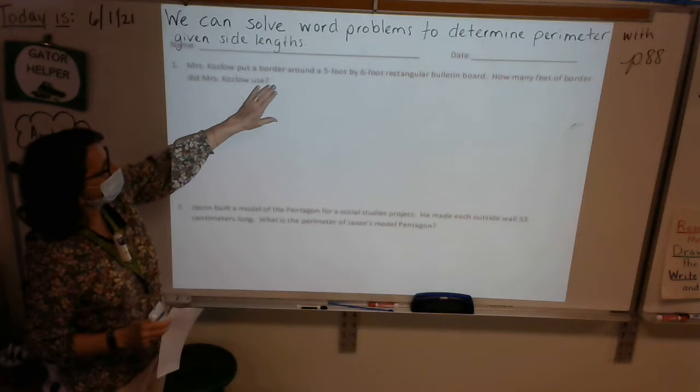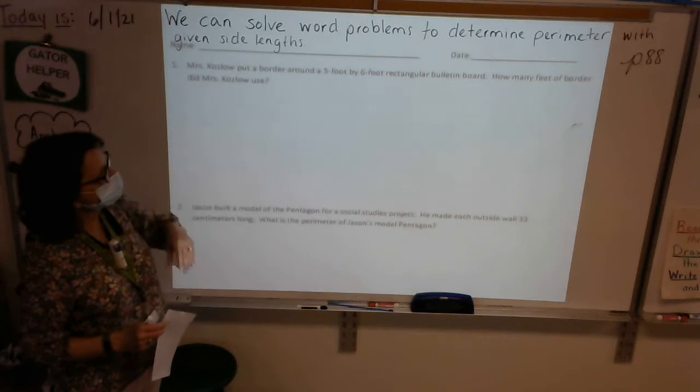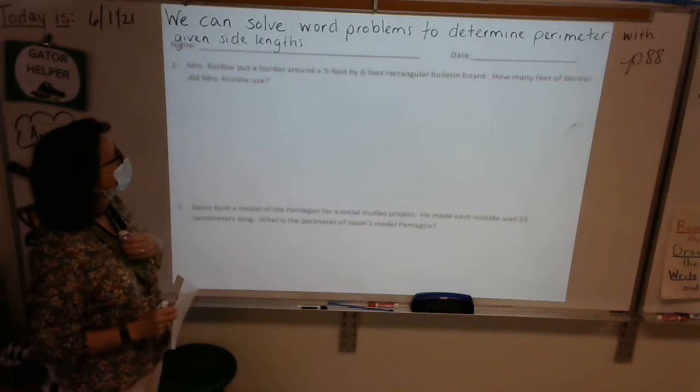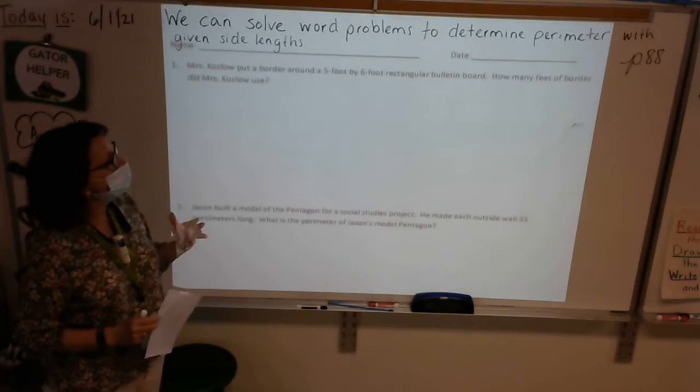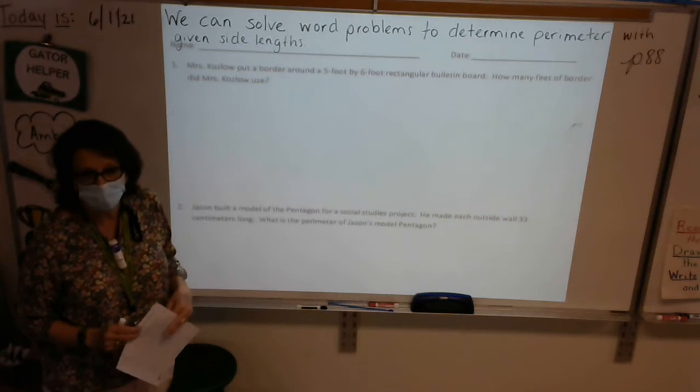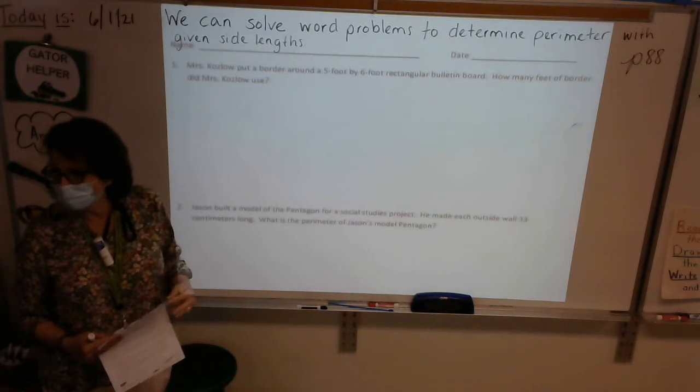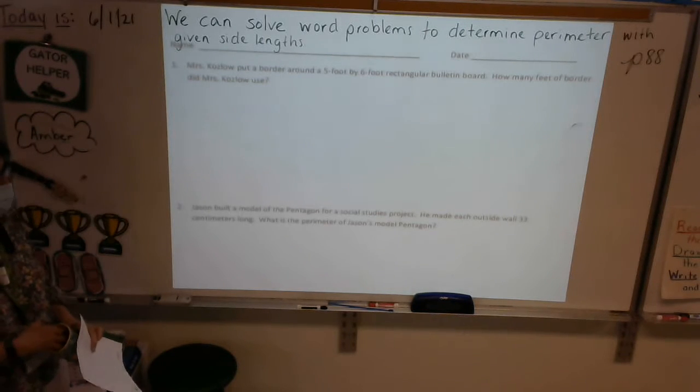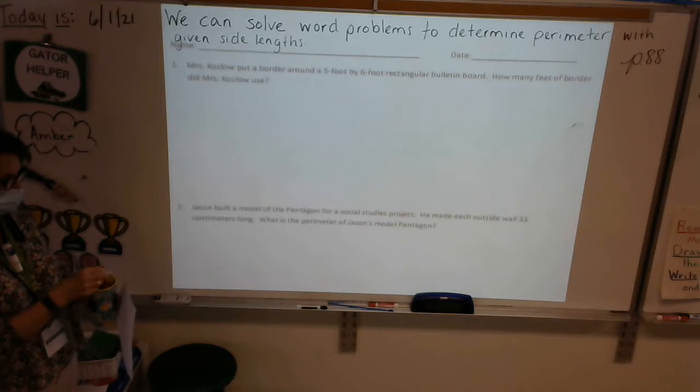Okay, so let's go ahead and get started with our first word problem. It says, Mrs. Coslow put a border around a 5 foot by 6 foot rectangular bulletin board. How many feet of border did Mrs. Coslow use? Well, we know we're talking about perimeter, because what important word do you see in that word problem that tells you we're going to be working on perimeter?